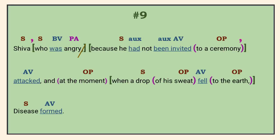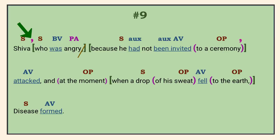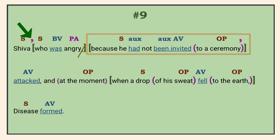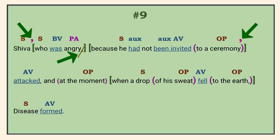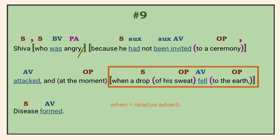Number 9. The relative clause 'who was angry' provides extra information and doesn't limit the subject to a specific Shiva — there is only one in Hindu mythology — so we use commas on both sides. However, the dependent clause itself is modified by another dependent clause, in this case an adverbial one, so the concluding comma goes at the end of the clause rather than after 'angry'; otherwise, the 'because' clause is cut off from the word it modifies. Starting with the relative pronoun 'when,' the next dependent clause identifies which moment, so it is adjectival. We keep the comma at the end because the independent clause comes after the coordinating conjunction and begins with a long modifier telling when the subject formed.